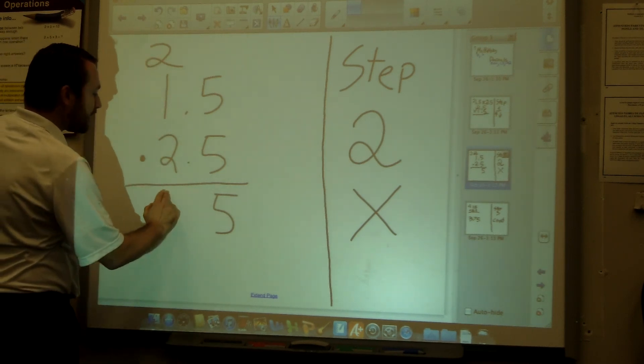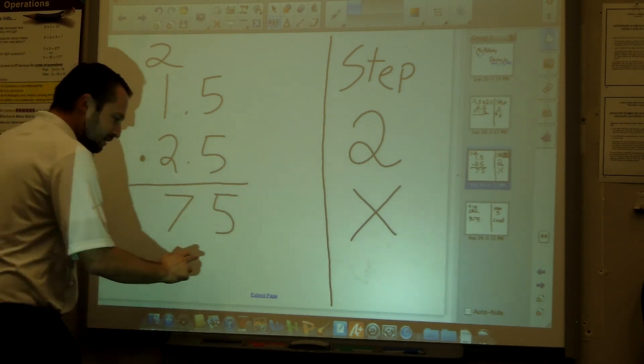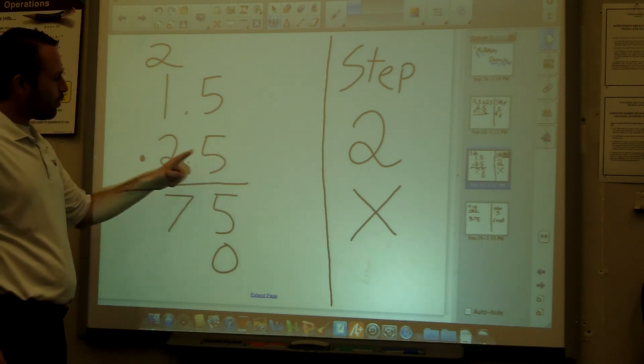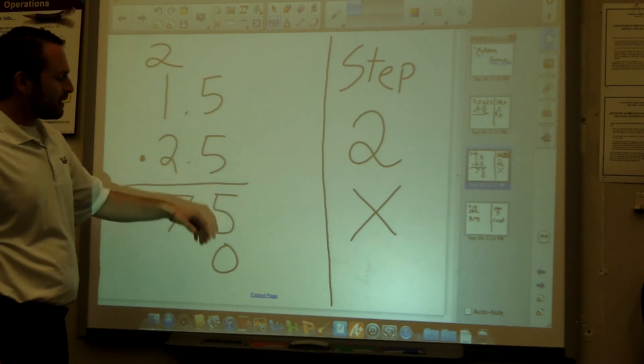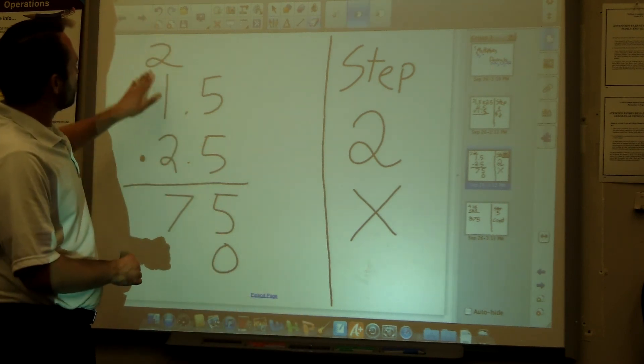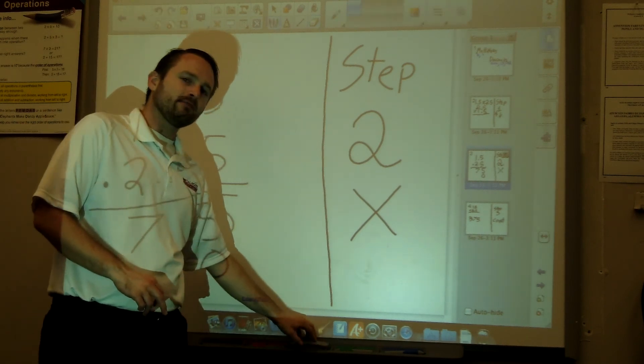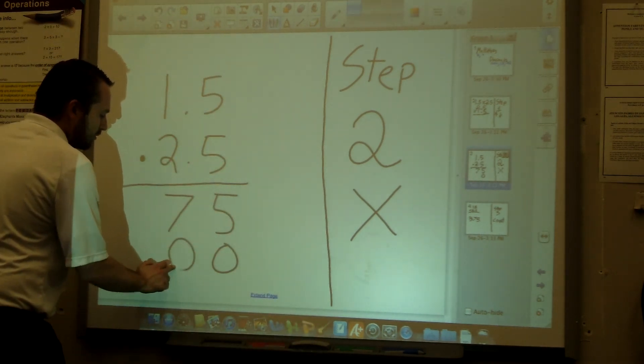Now we're going to go like this: put a 0 because we are 1 over, and we're going to start multiplying this. But first let's erase this part right here because we are starting a brand new number. Multiplying 2 times 5 is going to be 10, so I put a 0 and a 1 up here.